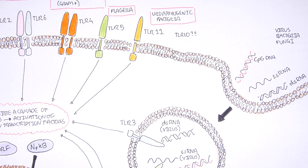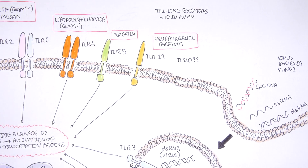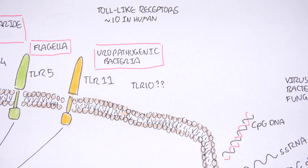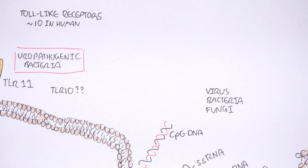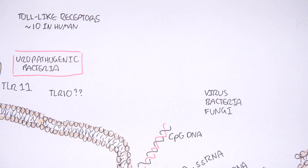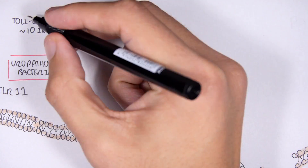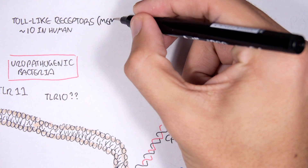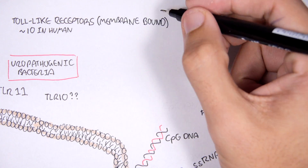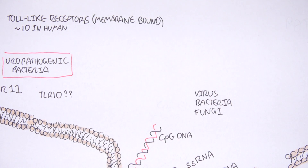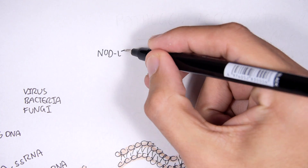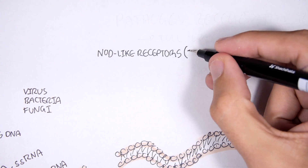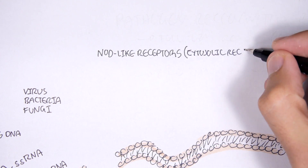In this video we're going to look at NOD-like receptors as well as the inflammasome, which are important complexes and receptors that help protect our body. To differentiate, we have toll-like receptors which are also important receptors in initiating the immune response — toll-like receptors are membrane-bound receptors bound to the plasma membrane. NOD-like receptors, which this video focuses on, are different: they are cytosolic receptors found within the cytoplasm of the cell.